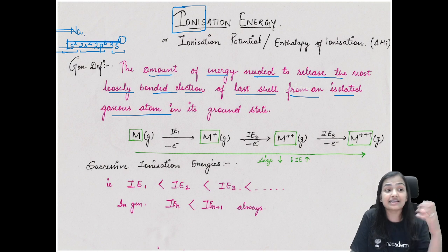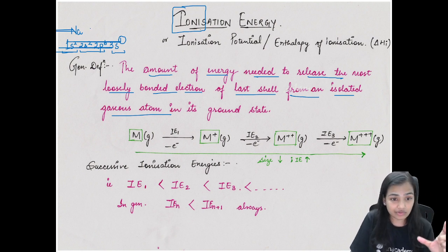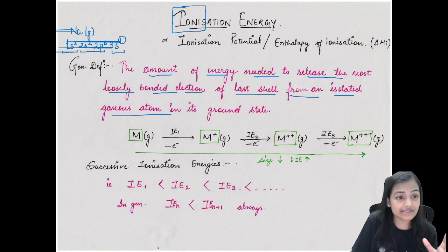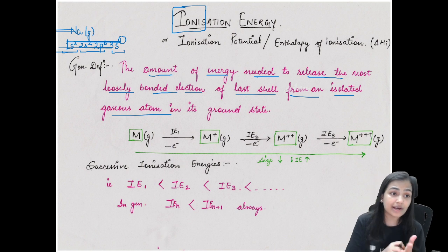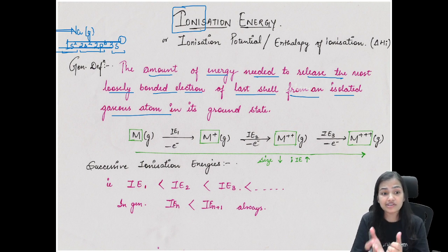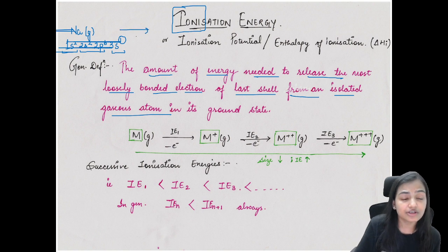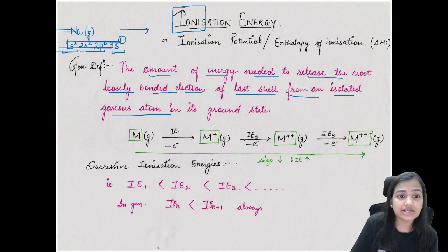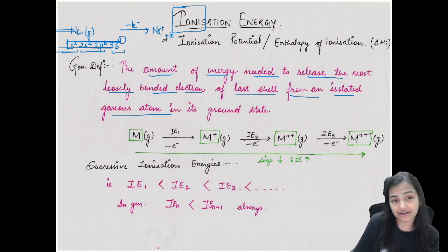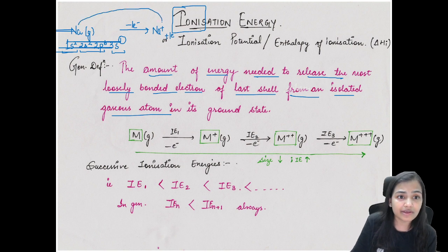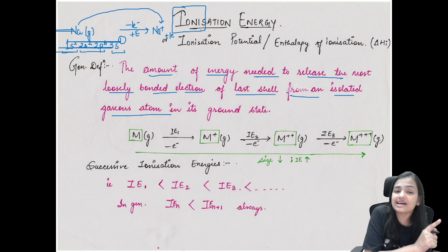The sodium atom must be in its gaseous state, in its ground state, as an isolated gaseous atom - not in a molecule like NaCl or NaF. When we remove the 3s¹ electron from sodium, we get Na⁺ plus one electron. From the sodium atom we get its ion Na⁺. The electronic configuration of Na⁺ becomes 1s², 2s², 2p⁶. Whatever energy is required to achieve this is the ionization energy.